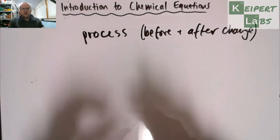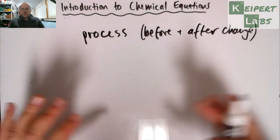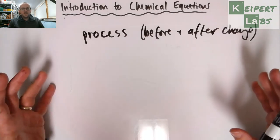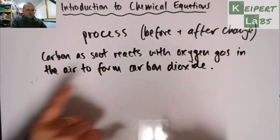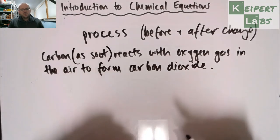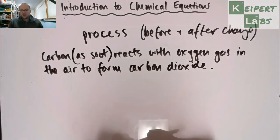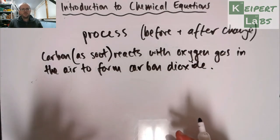So what I'm going to do now is I'm going to write out a verbal description of a chemical reaction. So carbon as soot reacts with oxygen gas in the air to form carbon dioxide. So it's a written description of a process of change that has happened.